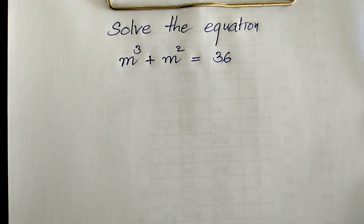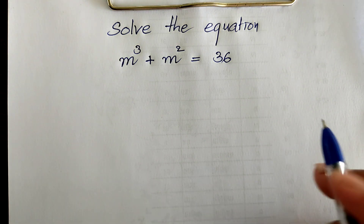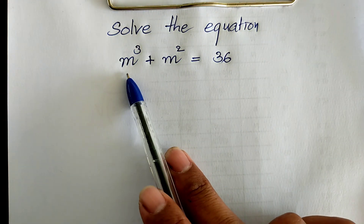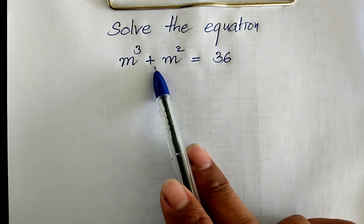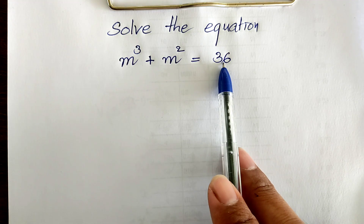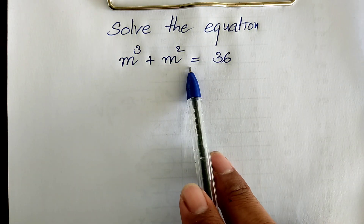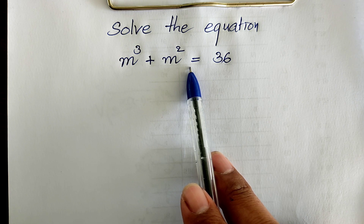Hello everyone. Welcome to my YouTube channel. Today I have an exercise like on paper. Show this equation that will have m power 3 plus m square equals 36. You know how to show this? If you know it, please do it. When you do it already, please come back to watch my videos from begin to the end to verify your solution.